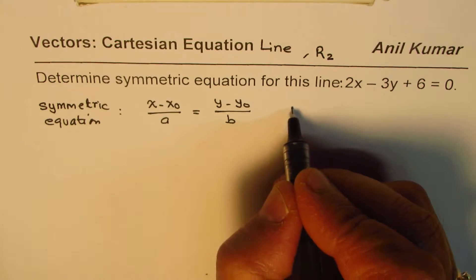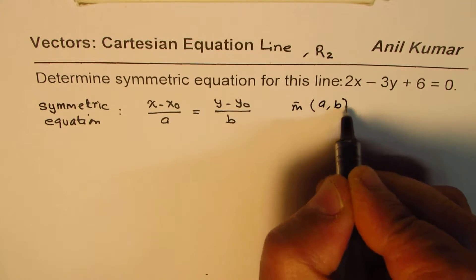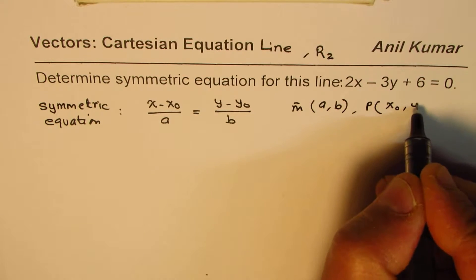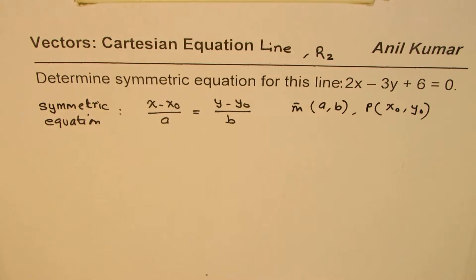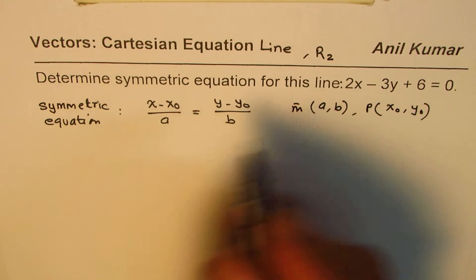Now, where the direction vector, we say m, is ab, and the point on the line is x0, y0. So, these are the things which help us to find the symmetric equation. Now, what are we given? We are given Cartesian equation.